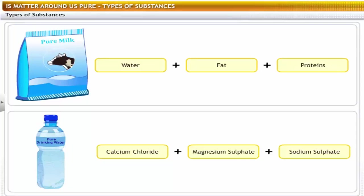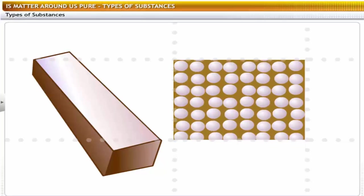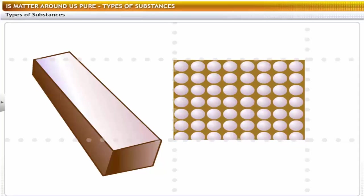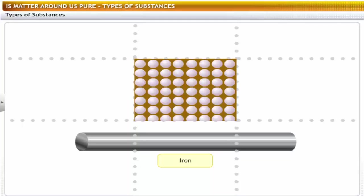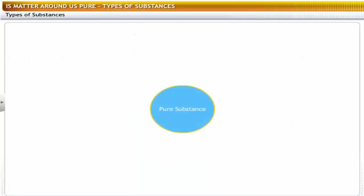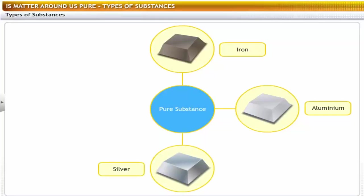For a chemist, the purity of a substance means the substance is made up of only one type of particle. The particles may be atoms or molecules. For example, the element iron is made of only one kind of particle called iron atoms. So iron is a pure substance. We can define a pure substance as a substance which is made of only one kind of particle. For example: iron, aluminium, silver, and gold.